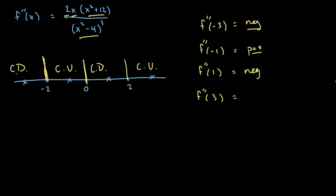Now let's talk about what is and what is not a point of inflection. A point of inflection is a place where the function changes concavity. We might be tempted to say negative two, zero, and two are all points of inflection — but that's not true. Two and negative two are not even in the domain of our function, so they're not points of inflection; those are vertical asymptotes. Zero, however, is in the domain, so zero is a point of inflection where the graph changes concavity.